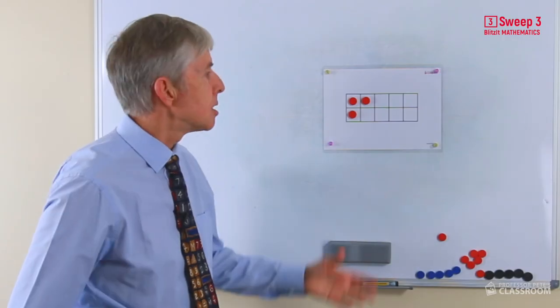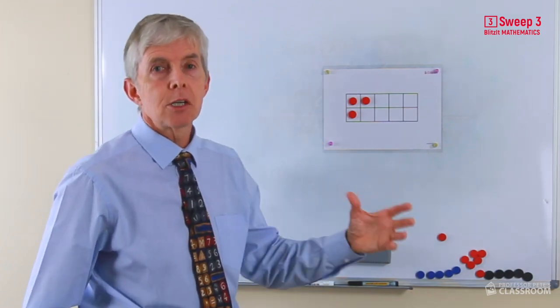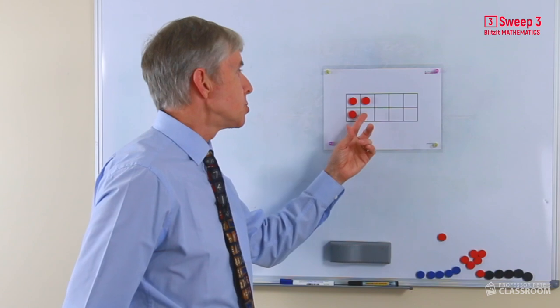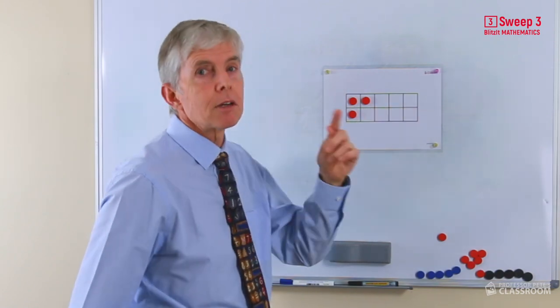The other thing to say is that we use the ten frame because it allows for subitization, the recognition of a number without counting. So that students will be able to see that three. They should be able to see that seven without counting the squares.